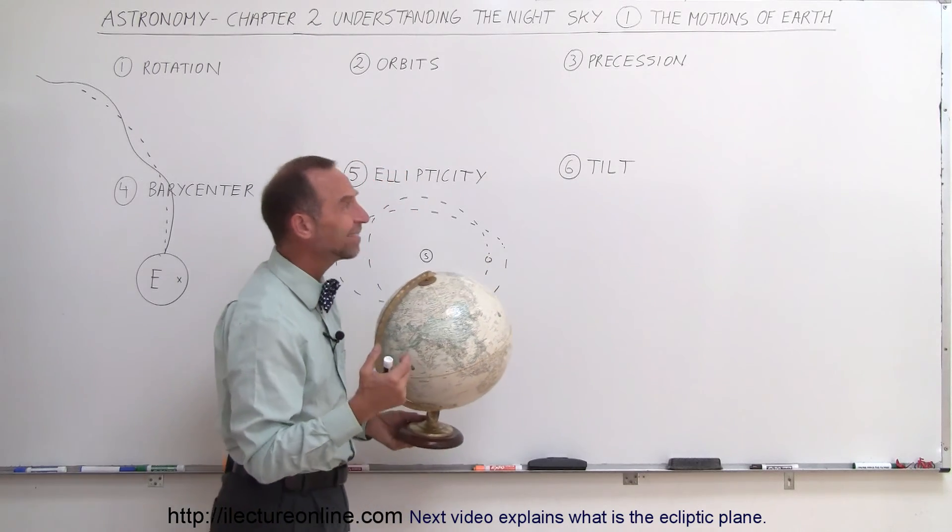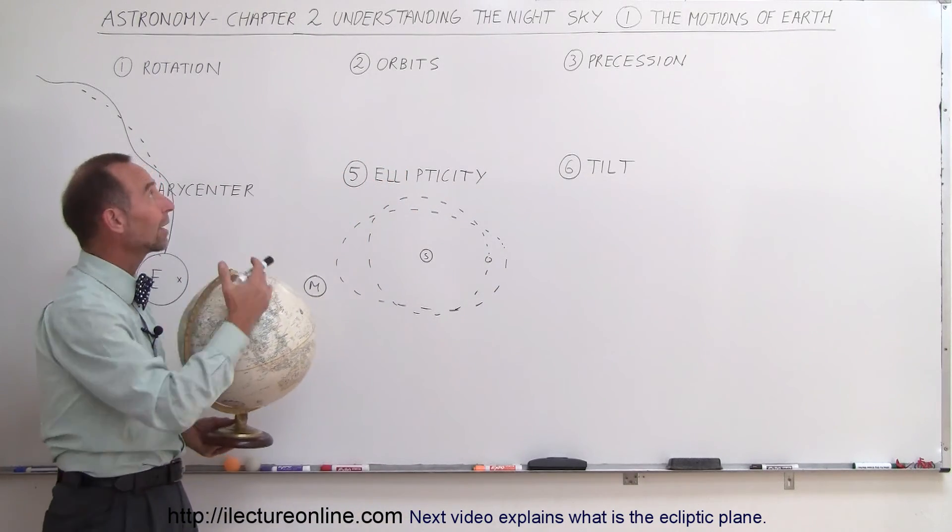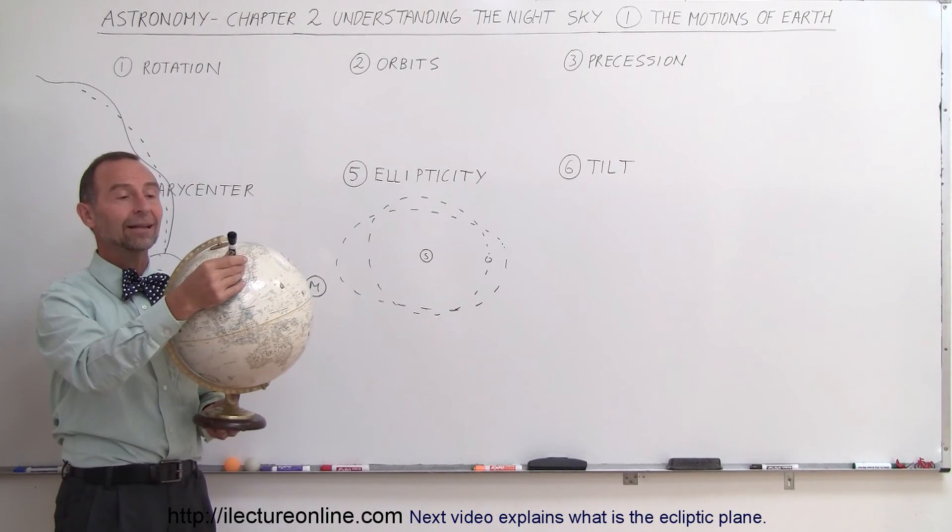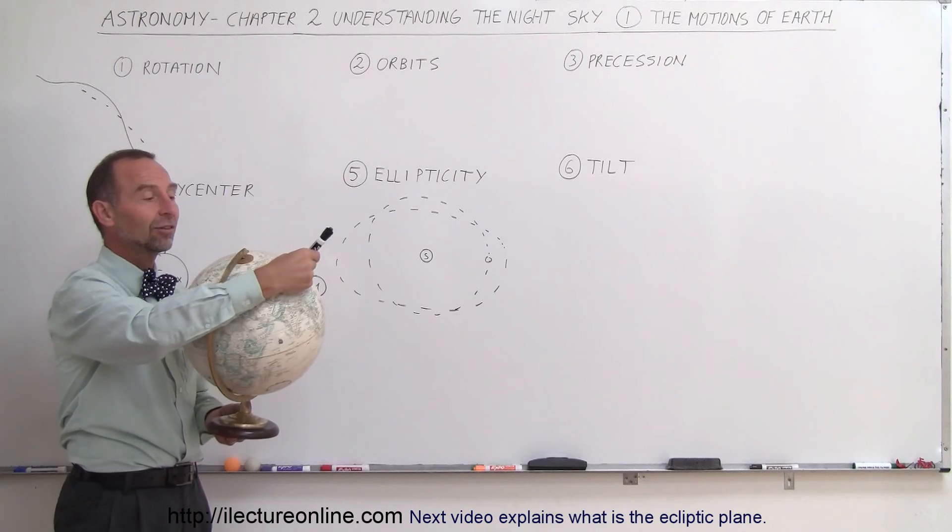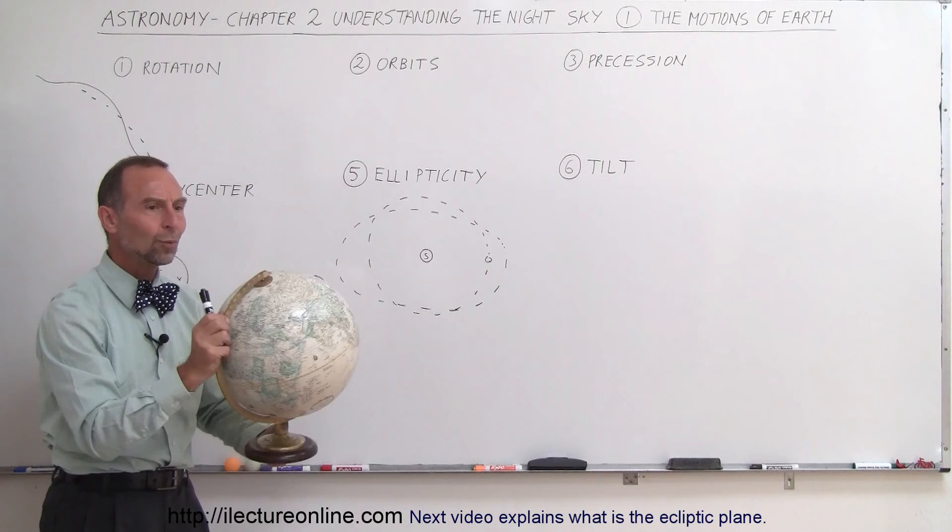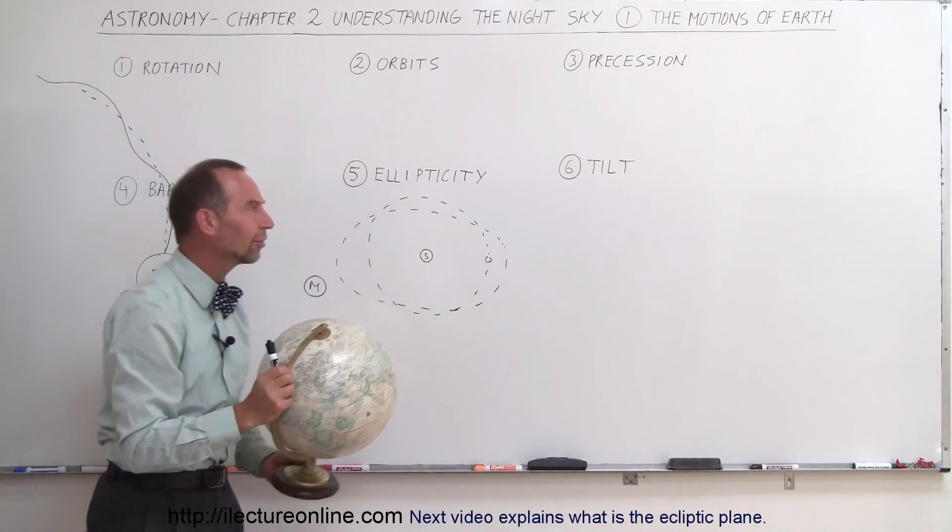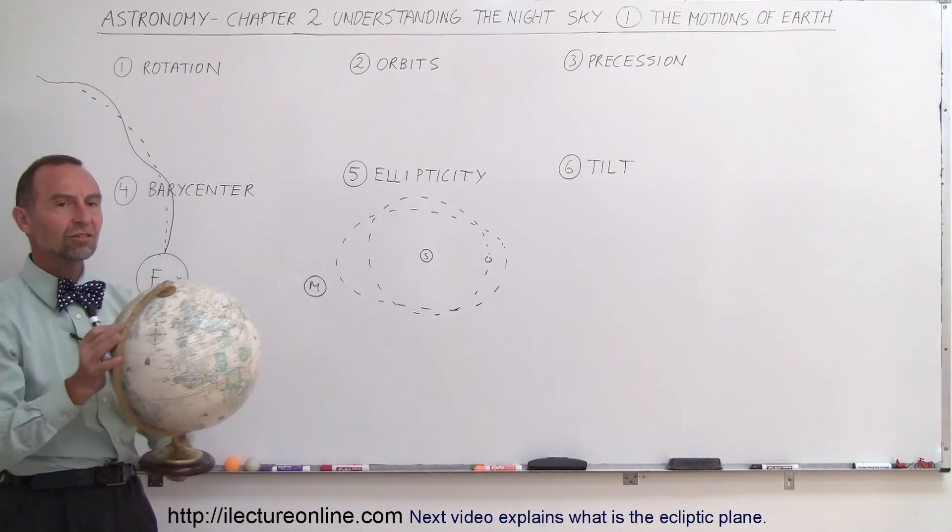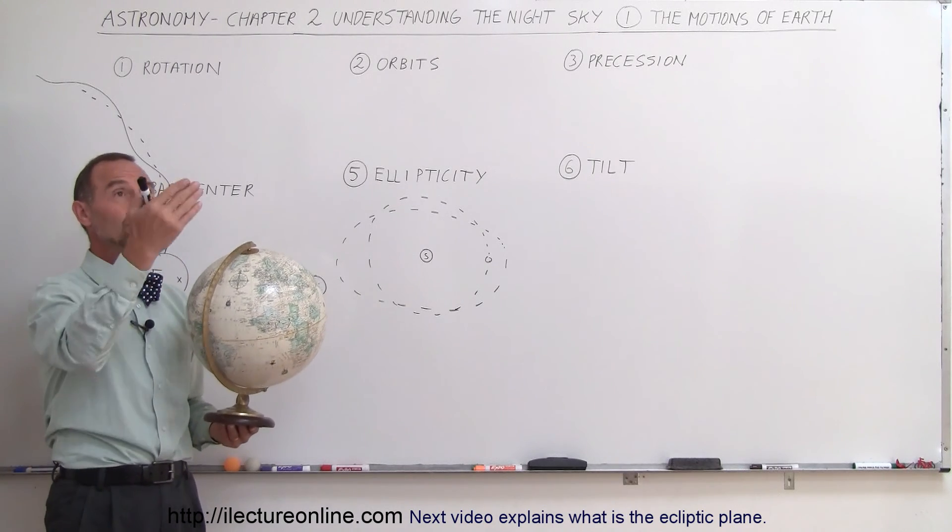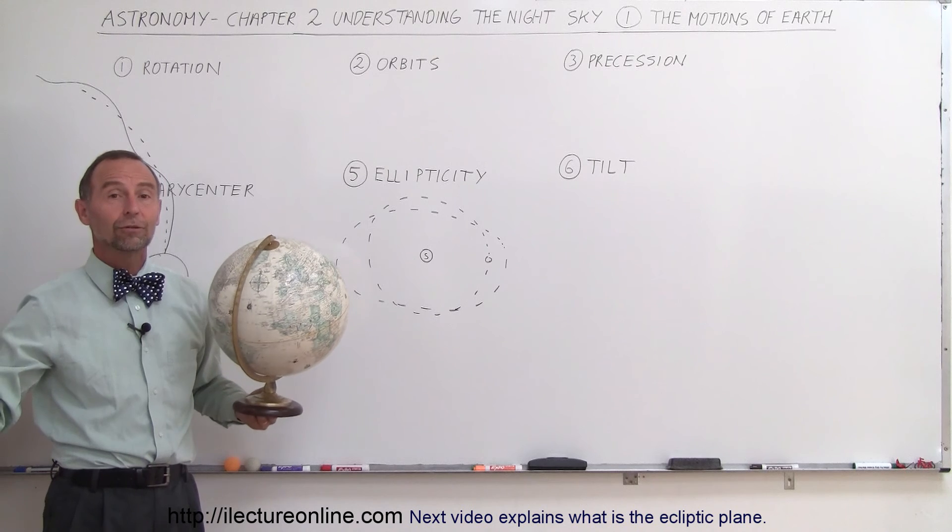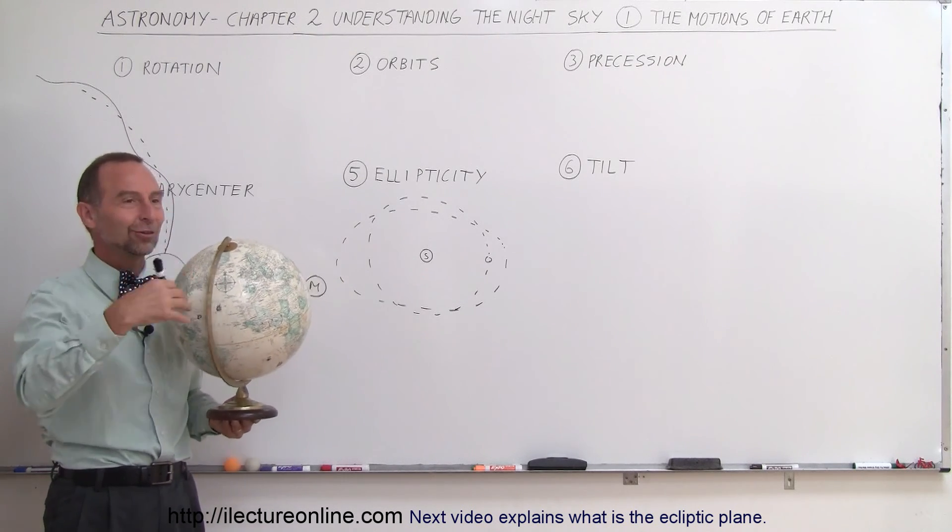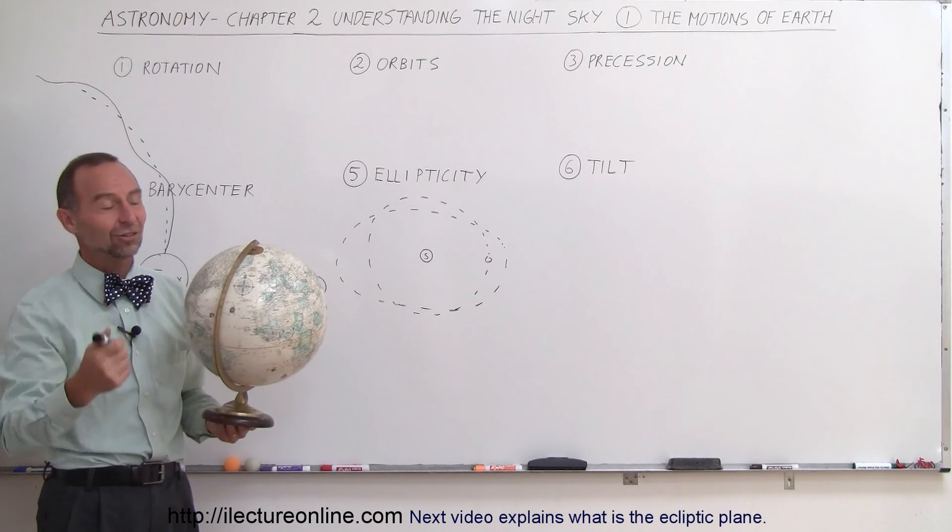So, six different motions of the Earth. Now, imagine trying to observe and understand the night sky. Here you are looking at the night sky on an object that's constantly rotating, constantly revolving, constantly precessing, constantly weaving back and forth around the barycenter, constantly changing in its elliptical orbit, and finally changing the tilt. All that will have an effect on you and how you observe the universe because you're not doing it from a steady object that doesn't move relative to the universe. You're doing it from an object that's constantly changing.